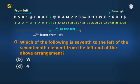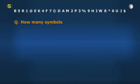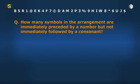So, option 1 is the right answer. Good. Take another question. How many symbols in the arrangement are immediately preceded by a number but not immediately followed by a consonant? And the options are as follows.